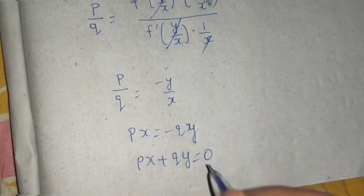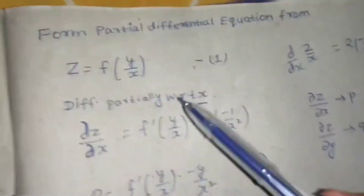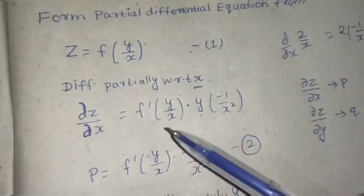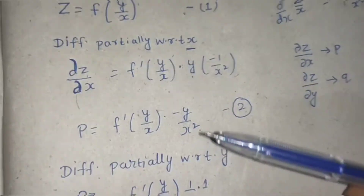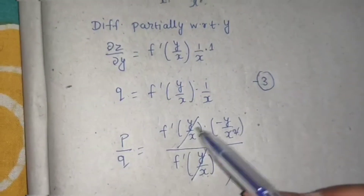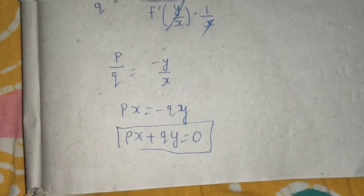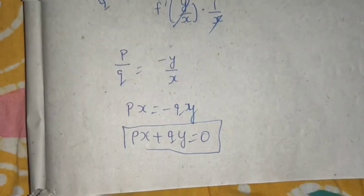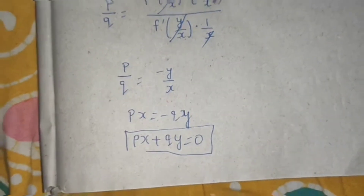I hope you understood this question. Nothing special was there — we had to remove the arbitrary function. For that, we differentiated partially with respect to x to get one equation, differentiated partially with respect to y to get another, divided both equations so the arbitrary function was removed, and finally reached the partial differential equation we needed to find. Thanks, and have a very nice day.